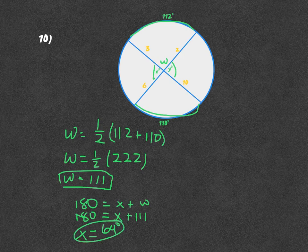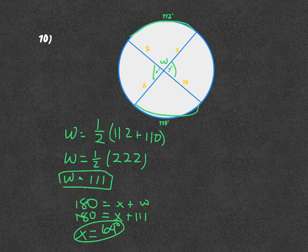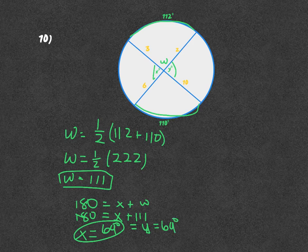Once you have X, then you also have Y. Y is also equal to 69 because of the vertical angles.